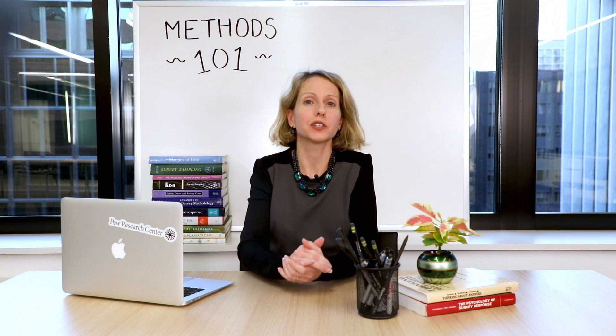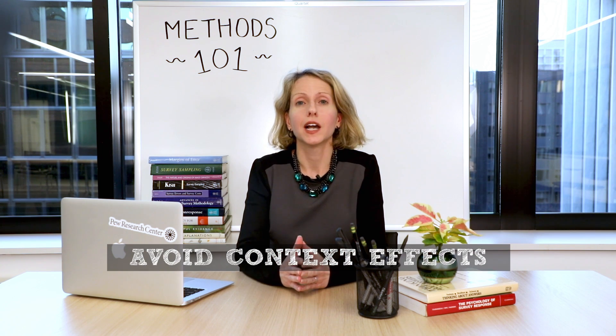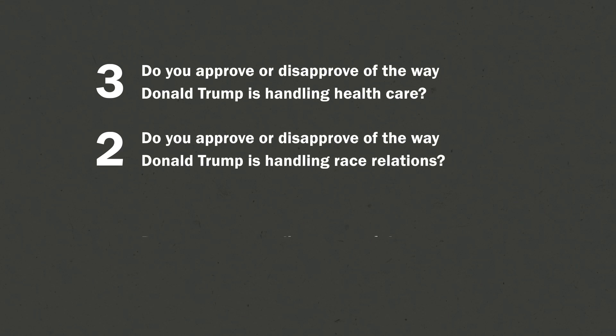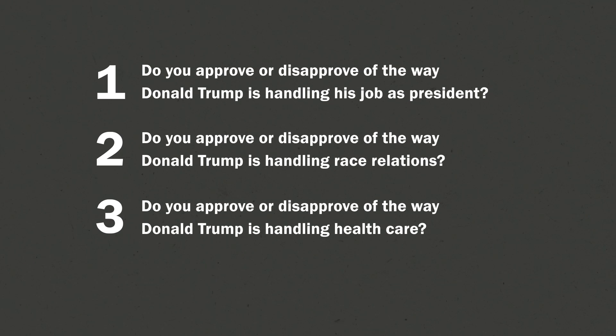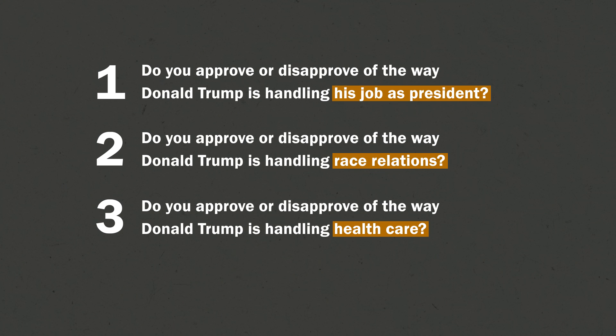Not only is the wording of each question important, but so is its placement in the order of the survey. A question asked early in an interview can influence how people interpret a later question or what considerations they have in mind when answering it. This issue is called a context effect, and it's why most polls that measure attitudes about the president's job performance or how people intend to vote ask those questions at the beginning of the questionnaire. That way, when people evaluate the president, they haven't been primed to think about any particular dimensions, such as their handling of healthcare or racial relations, and the survey can get a cleaner overall measurement.